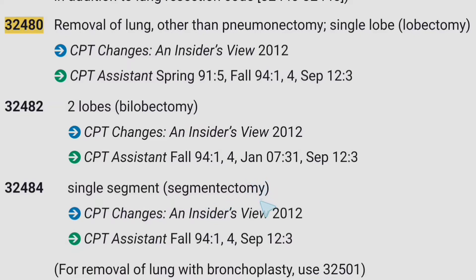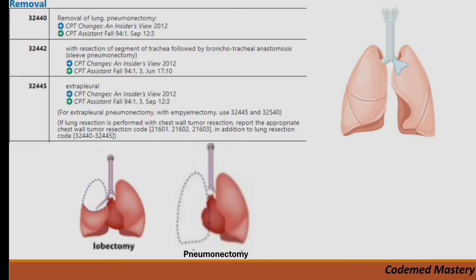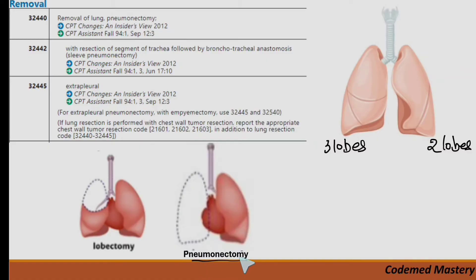Let's understand pneumonectomy, lobectomy, and segmentectomy. Looking at the picture of the lung: the left lung has two lobes and the right lung has three lobes. Pneumonectomy is a surgical procedure in which one entire lung is removed — it may be the left lung or the right lung. If any one lung is removed, that is pneumonectomy.